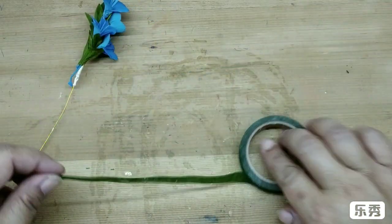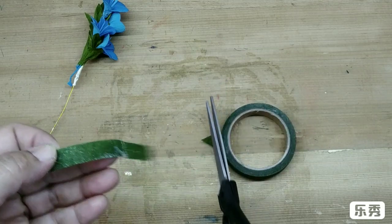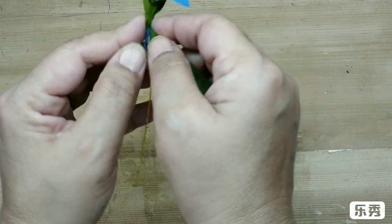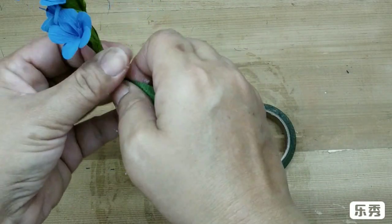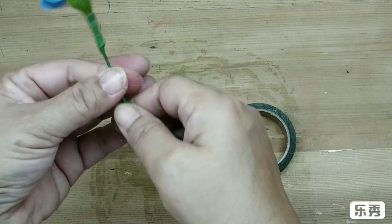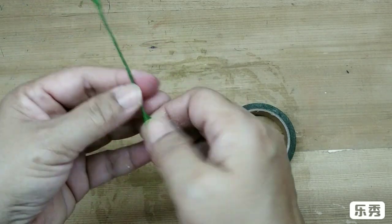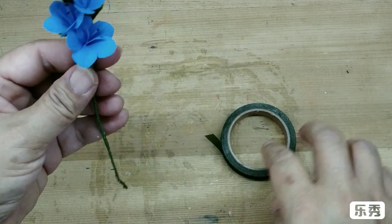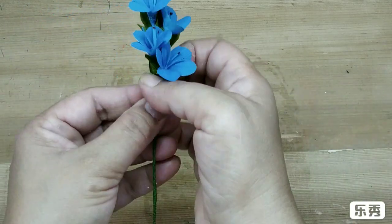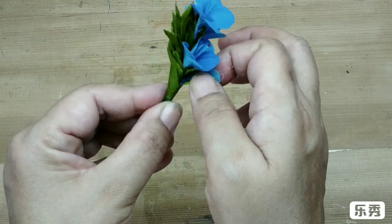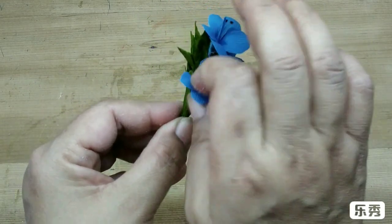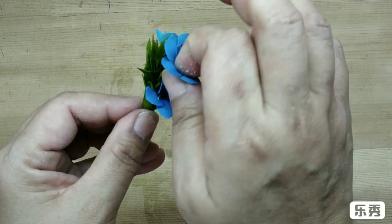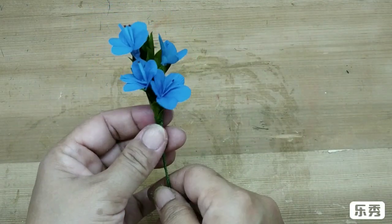Then take the green tape and just wrap it from the base of the flower till the end of the wire. Like so. Now just open out the flower a bit, like this.